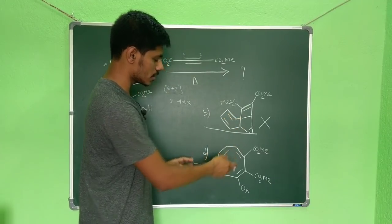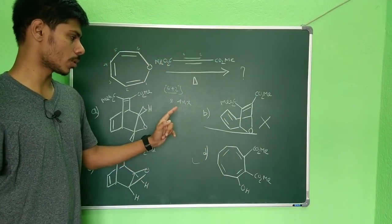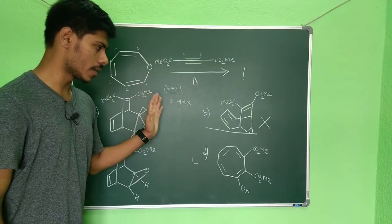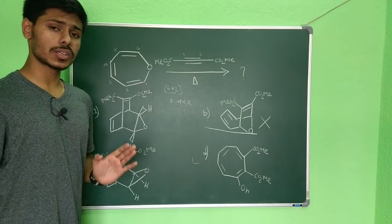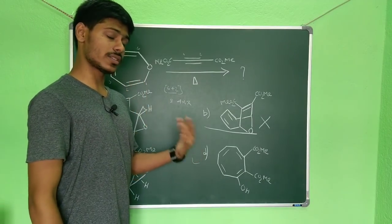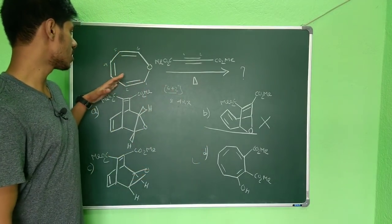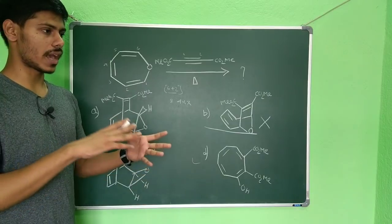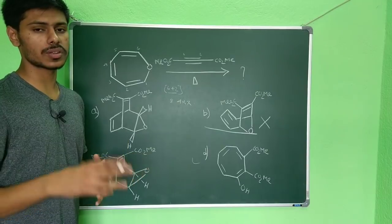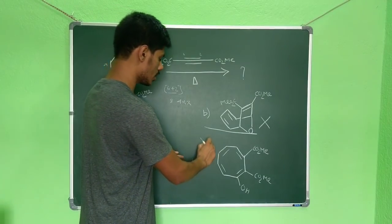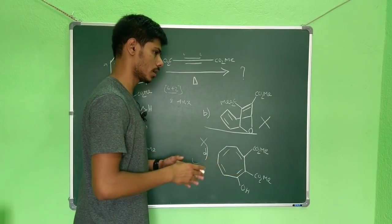This product is the product of a suprafacial addition, and that's why it cannot be the correct option. This D can come either from this or it may also come from the antifacial reaction, but in this system the antifacial addition is geometrically or sterically not well favored because this is a rigid system, so option D will also not be correct.